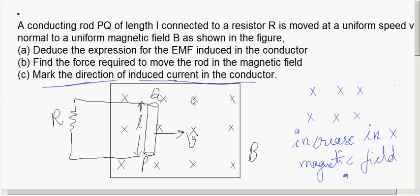Since the cross magnetic field is increasing, we need a dot field to oppose it. To produce a dot magnetic field at the center of the loop, the current must flow in the anti-clockwise direction.